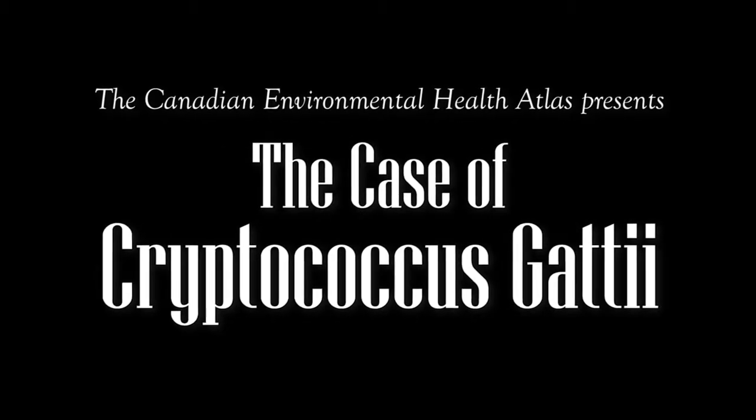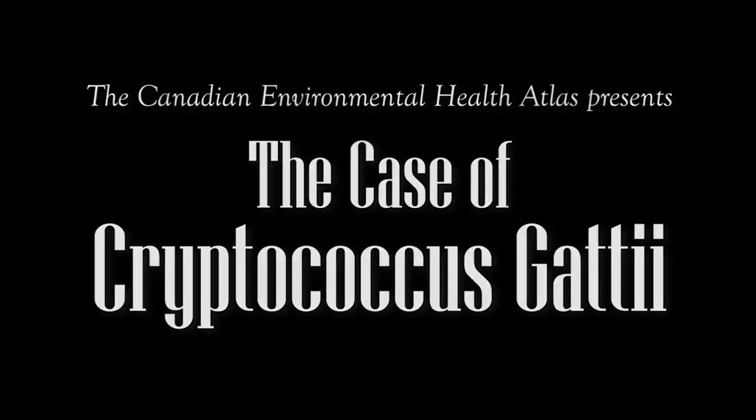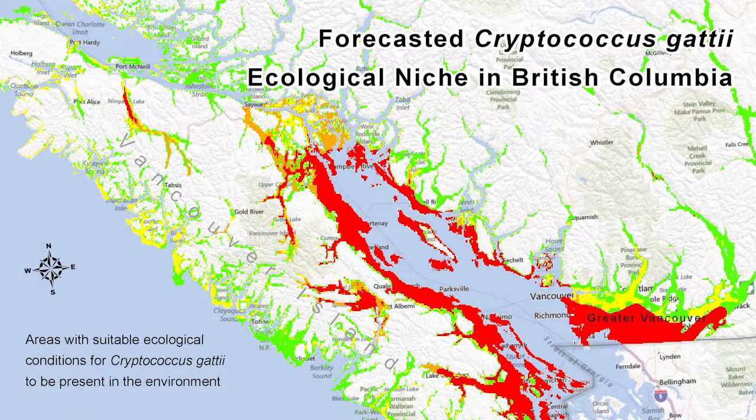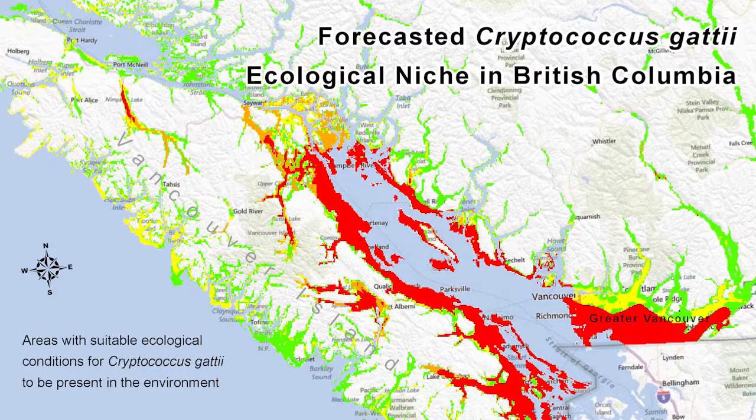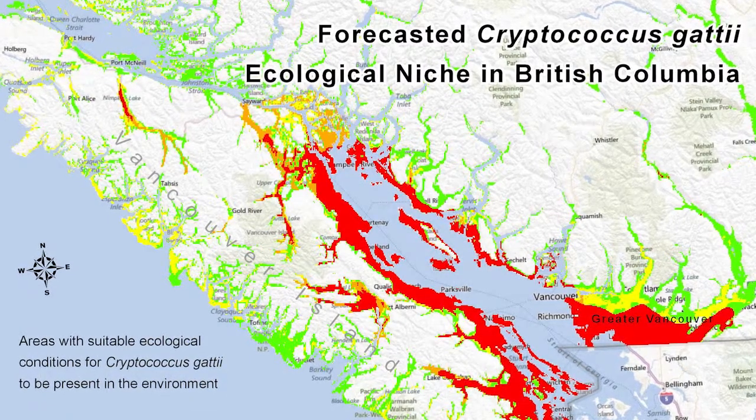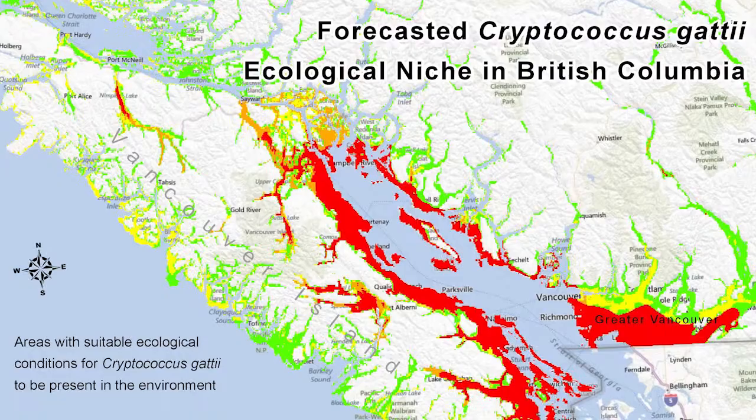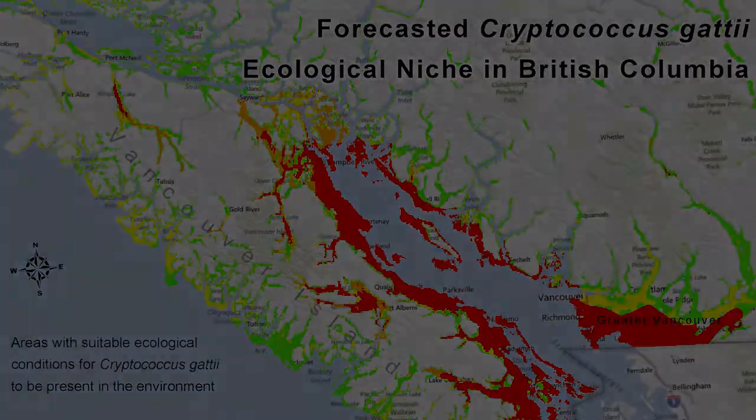The case of Cryptococcus gattii. An outbreak of a potentially deadly disease was first noticed in British Columbia, Canada in 2001. The disease caused symptoms that resembled pneumonia, a tumor, or an infection of the brain.